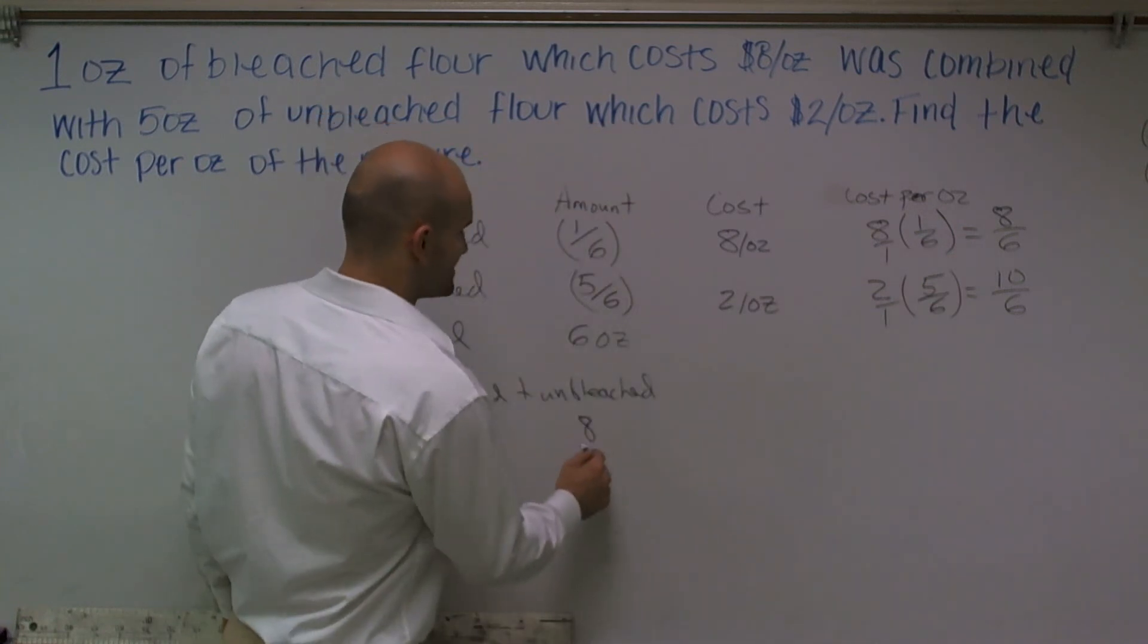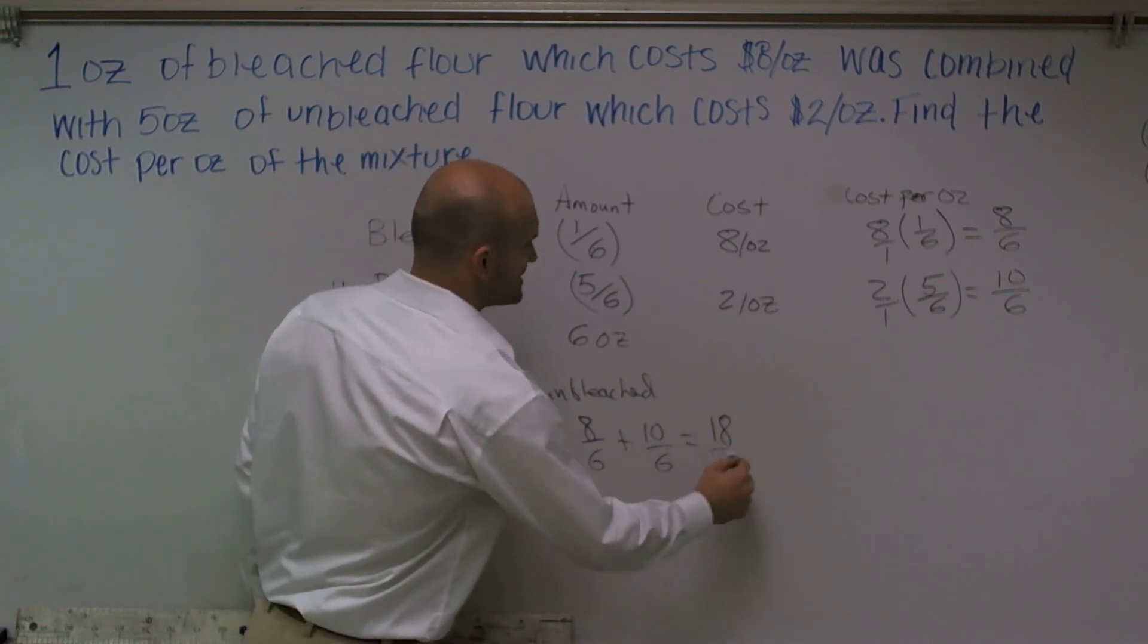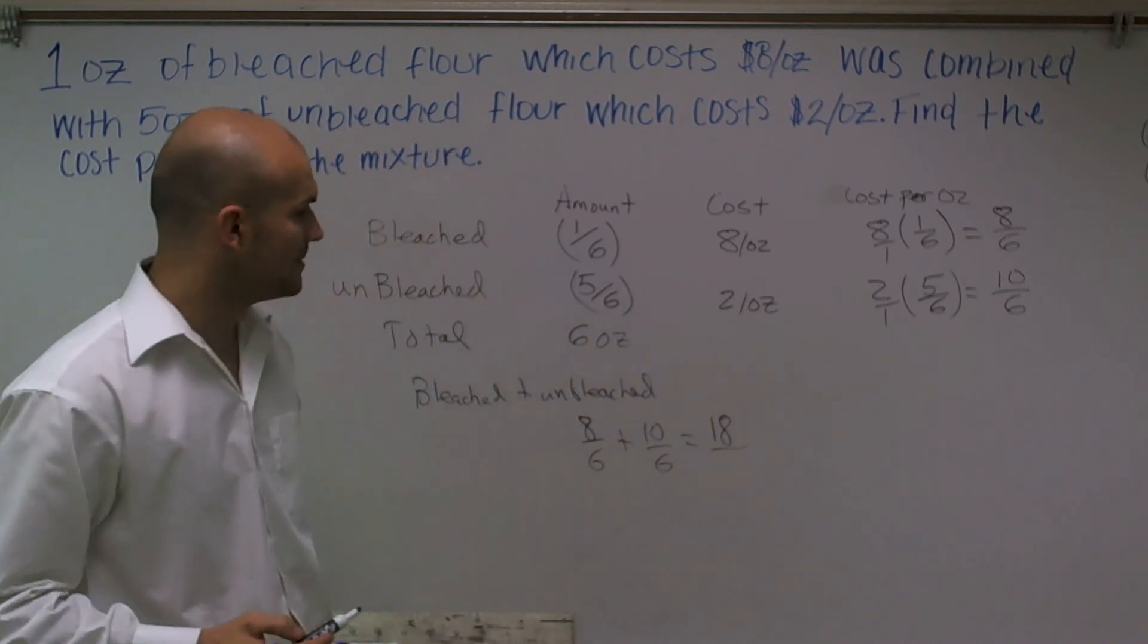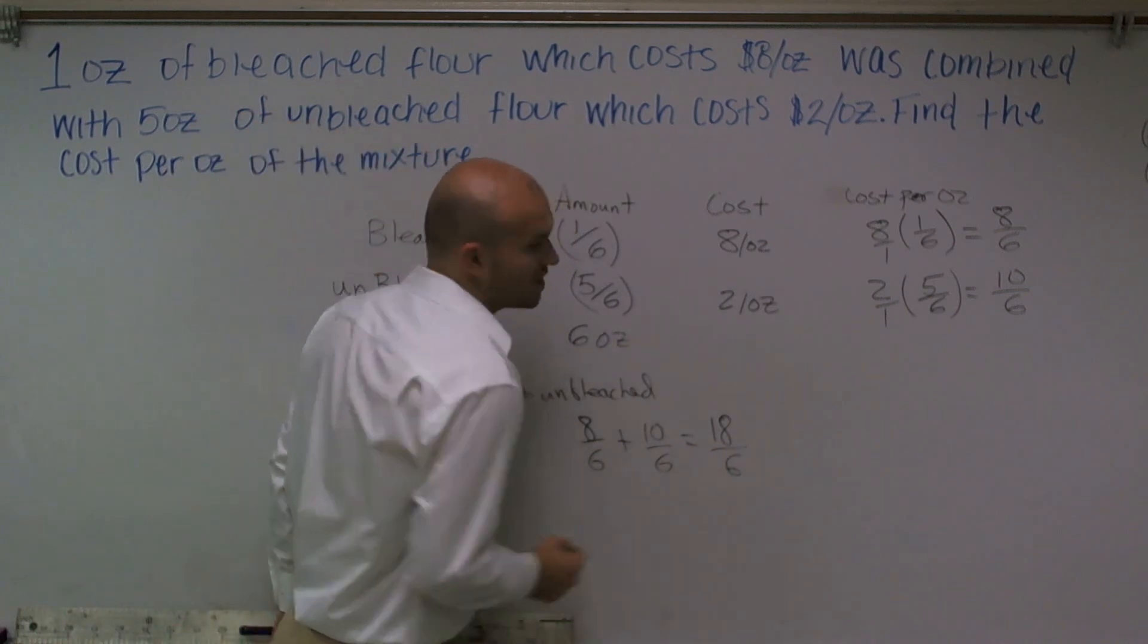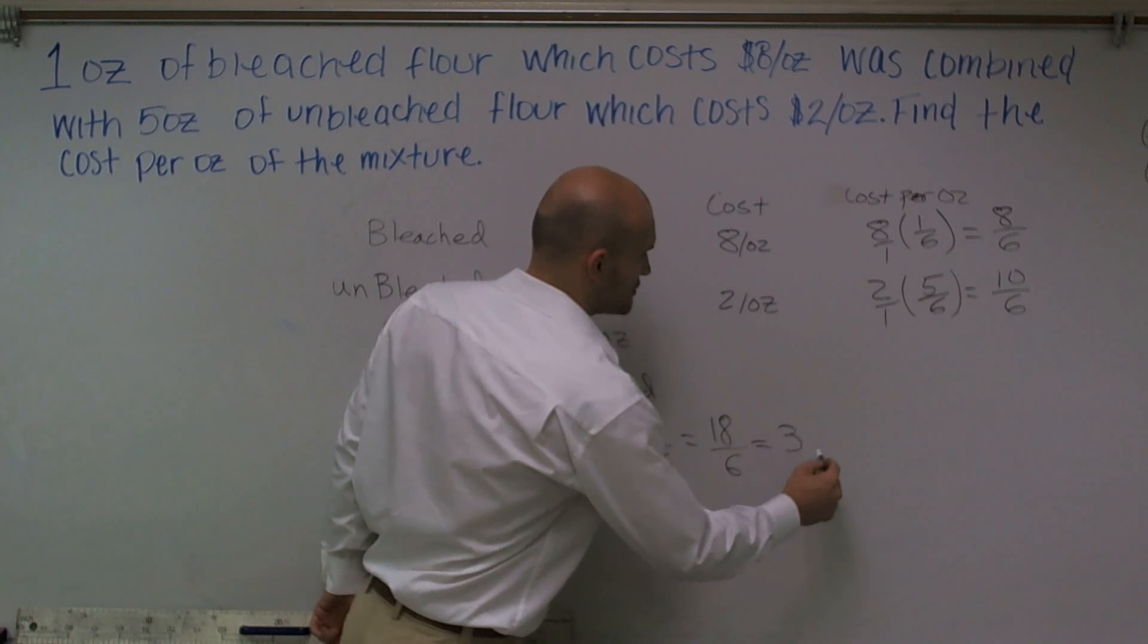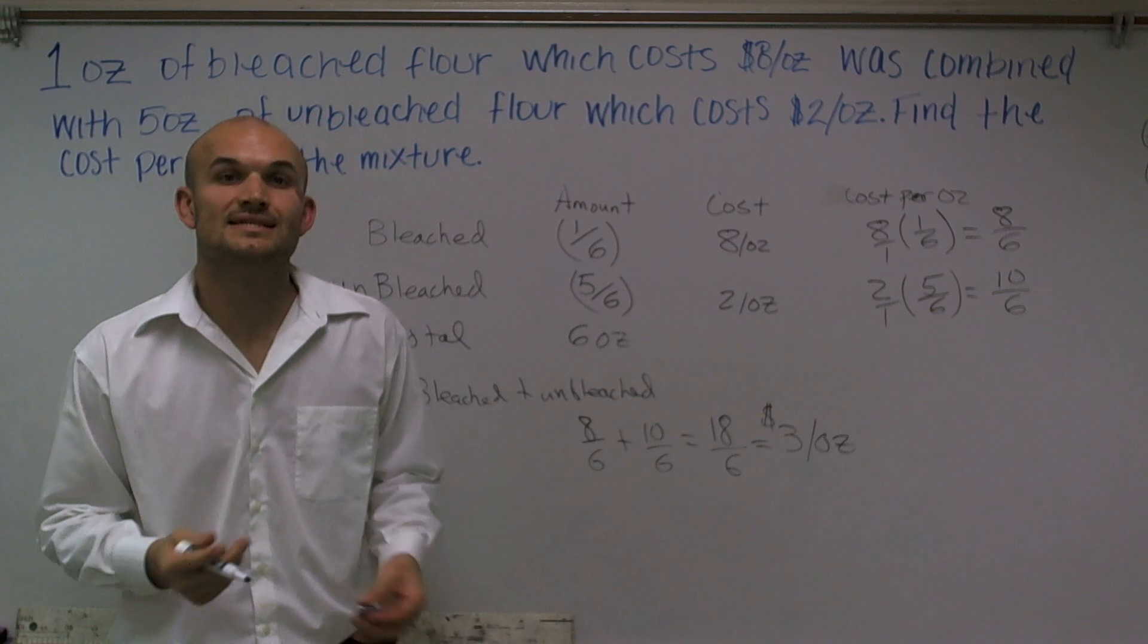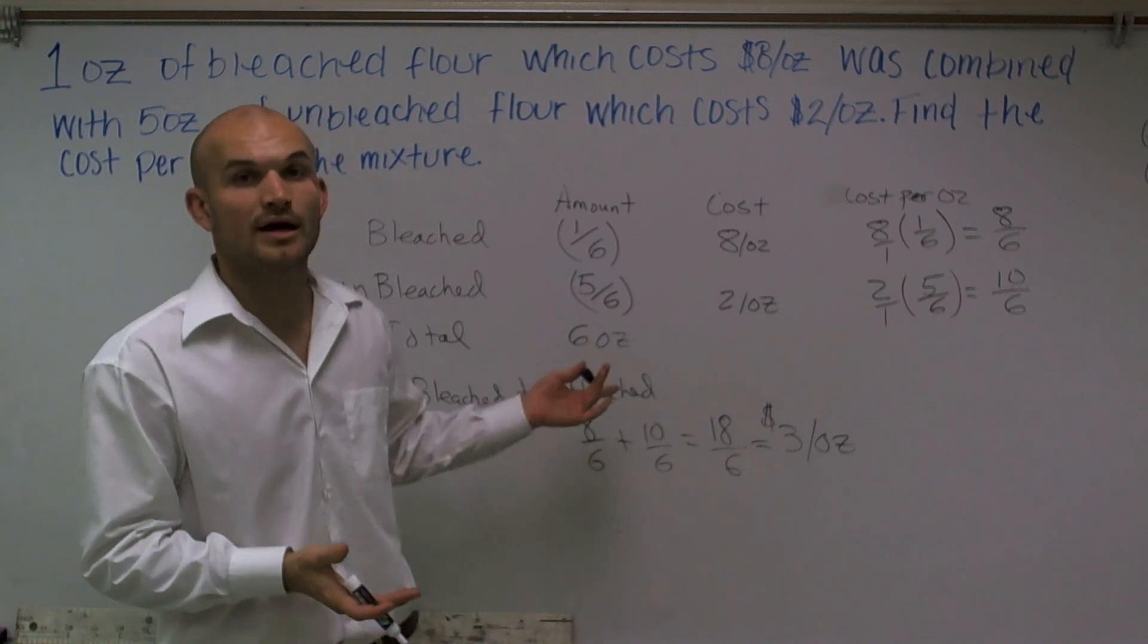So I'm going to have 8/6 plus 10/6, which is going to give me 18/6. That means it's going to cost us $18 per 6 ounces, which reduces down to $3 per ounce. And that's how you set up and solve a mixture problem.